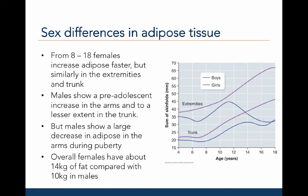Sex differences in adipose tissue become more obvious around puberty. From the ages of eight to eighteen, females increase adipose faster than males. The rate of increase is similar for the trunk and the extremities in females. Males show a pre-adolescent increase in adipose in the arms and to a lesser extent in the trunk. However, males show a large decrease in adipose in the arms during puberty, which is evident in this graph from ages eleven and a half to eighteen years. Overall, females have about fourteen kilograms of adipose compared with ten kilograms in males.